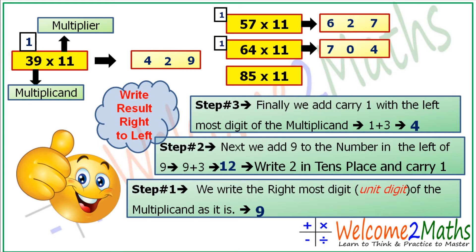Now last example is 85 into 11. So let's write the rightmost digit of 85, it's 5. After that, 8 plus 5 is 13, so let's write 3 at tens place and 1 becomes a carry. Now let's add 1 and 8, the leftmost digit of 85. So 1 plus 8 is 9, that's our answer.